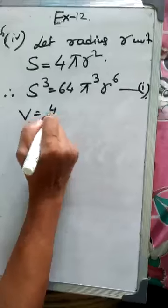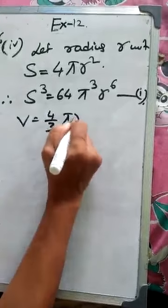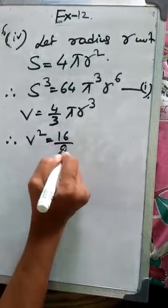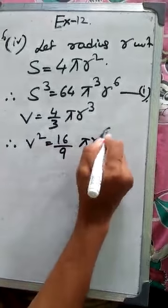V is equal to 4 by 3 π R³. V² is equal to 16 by 9 π² R to the power 6.